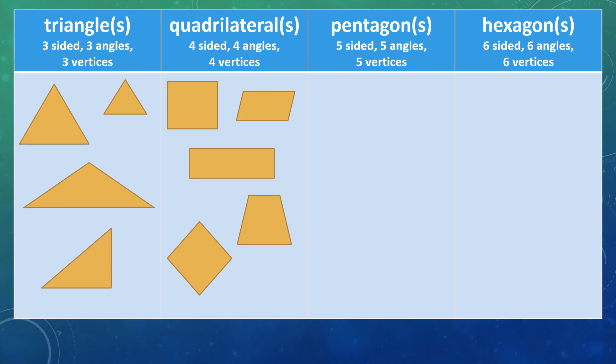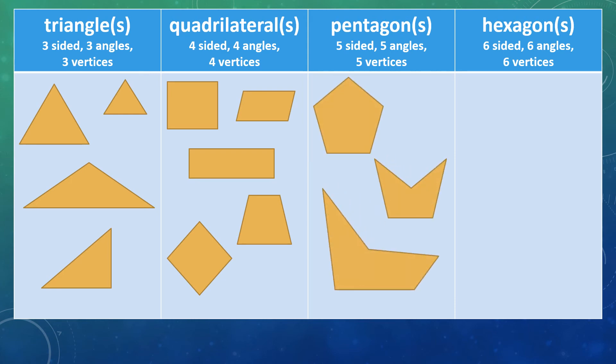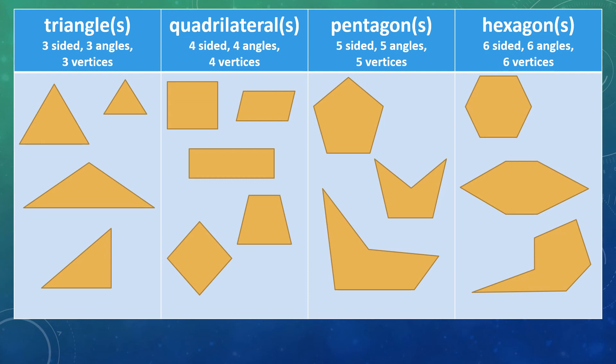Next, we have our five-sided, five-angled, and five-vertice shapes — we call those pentagons. 'Penta' means five, and 'gon' means angled. And for our last category, those six-sided and six-angled shapes are called hexagons. 'Hex' means six, and as we learned in the last word, 'gon' stands for those angles. So when you have a hexagon, you have a six-sided and six-angled shape.